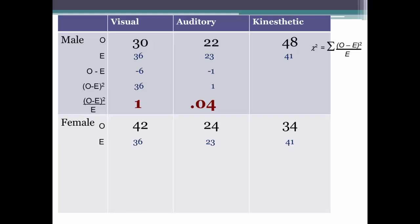And for male kinesthetic learners, observed 48, minus the expected, 41, is 7. 7 squared is 49, and 49 divided by the 41, the expected, is 1.2.